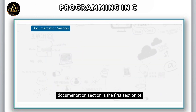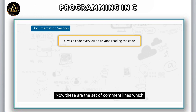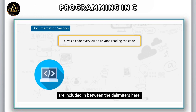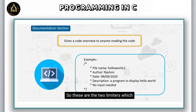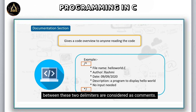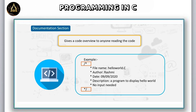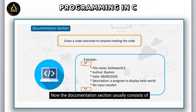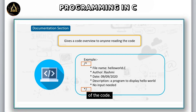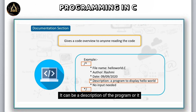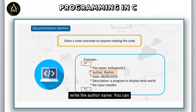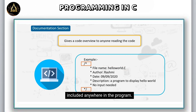The documentation section is the first section of the C program. These are a set of comment lines which are included between delimiters. Any lines included between these two delimiters are considered as comments. The documentation section usually consists of comment lines that give an overview of the code — it can be a description or logic of the program, the author name, a file name, etc. These comment lines can be included anywhere in the program as long as they are within the delimiters.